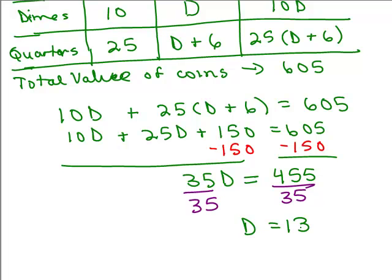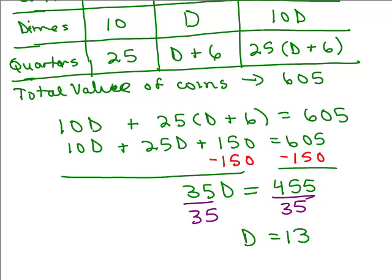Now, remember what D stood for? D stood for the number of dimes, right? And we know we had 6 more quarters, so D plus 6, that will stand for the number of quarters. So now, we're going to check our answer by making a little chart, and see if this all makes sense.